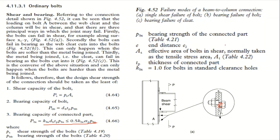The bearing strength pbs applies to the connected part — a universal beam (UB) or universal column (UC). The end distance e1 shown earlier applies here. The effective area of a bolt in shear is normally taken from clause 4.22 as the thickness of the connected part. The coefficient kbs equals 1.0 for bolts in standard clearance holes.